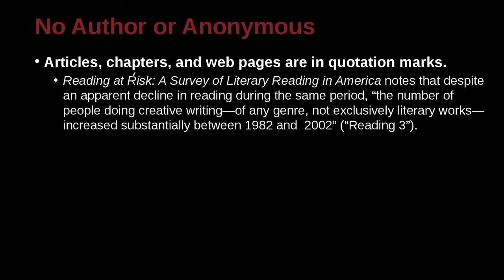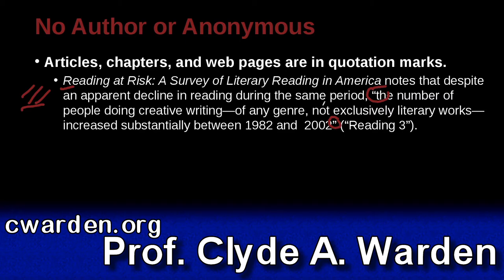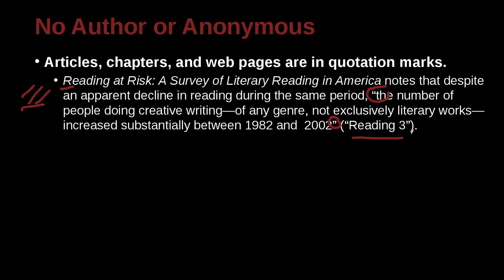Let's look at another example here: 'Reading at Risk: A Survey of Literary Reading in America.' We can see that the full title is in italics, which is the same as underlined, meaning it's the title of something larger like a book. Inside this book, it notes that despite an apparent decline in reading during the same period, the number of people doing creative writing of any genre, not exclusively literary works, increased substantially between 1982 and 2002. So this is a quotation, and we need to say where it came from. It is inside that book, specifically a chapter called 'Reading Three,' which we know is a chapter because it has quotation marks around it.